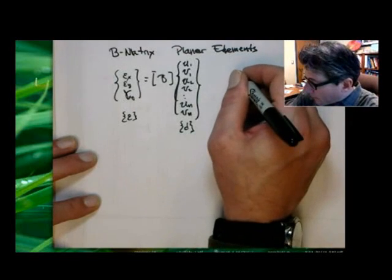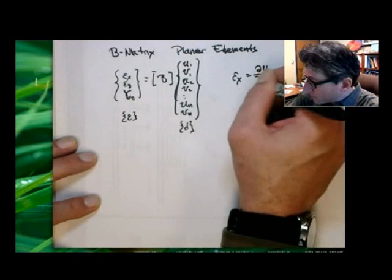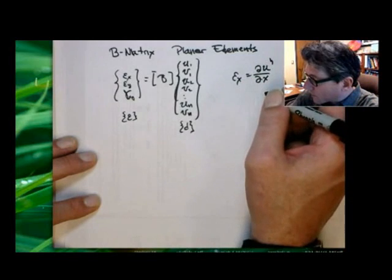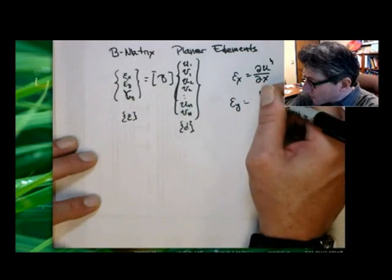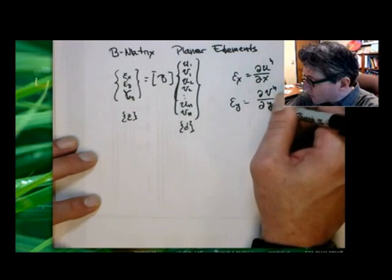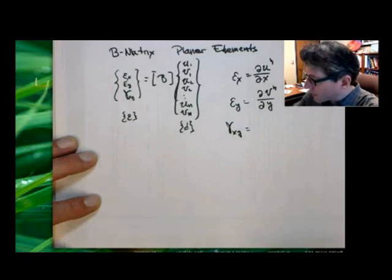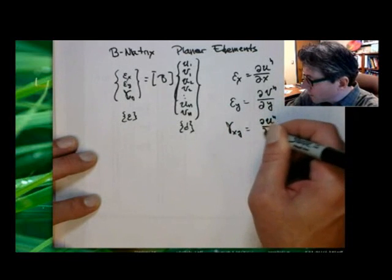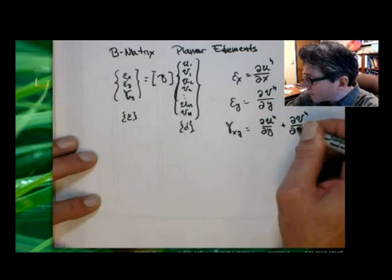Just to recall: the strain in the X direction is the partial of U with respect to X, so we'll be taking the partial of the approximation of the displacement in the X direction. The normal strain in the Y direction is the partial of V with respect to Y. And the in-plane engineering shear strain is the partial of U with respect to Y plus the partial of V with respect to X.